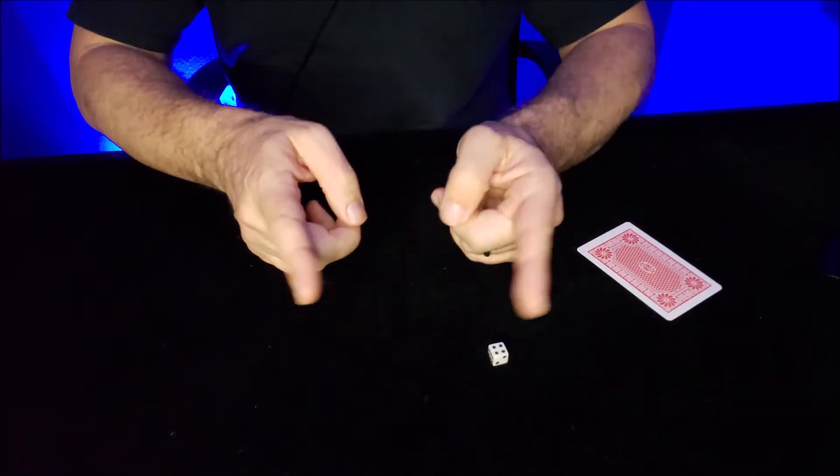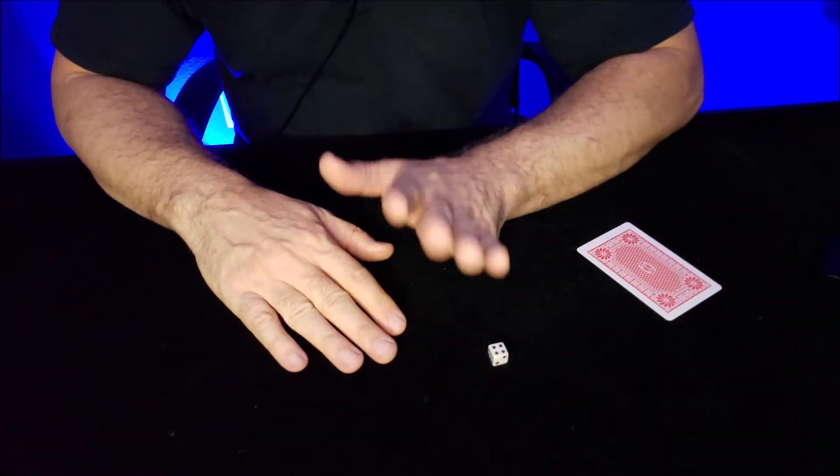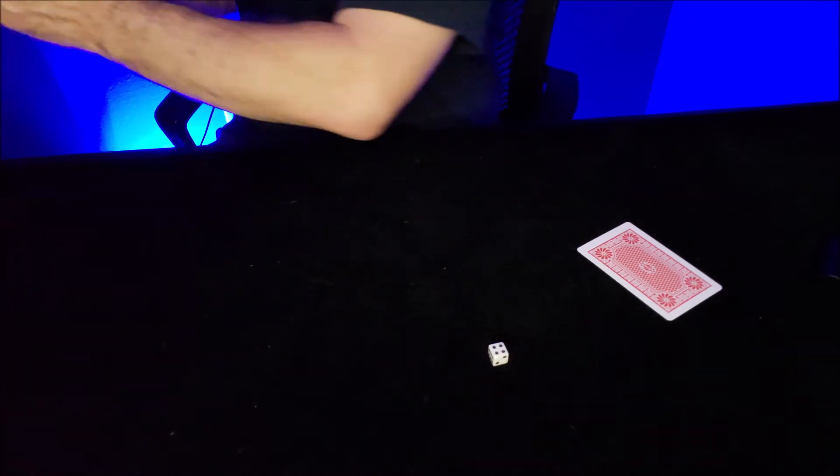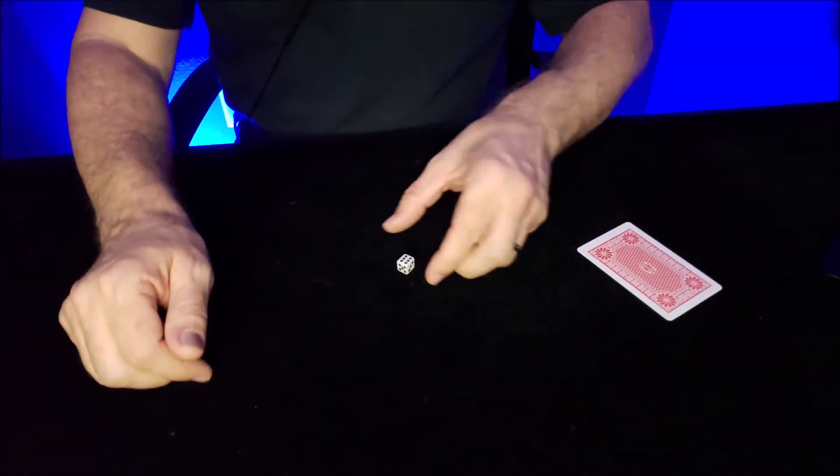Okay, so you the magician, you don't have to do anything. You're gonna turn aside like this so that you can't see, and they're gonna roll their die. Let's say they roll a six.